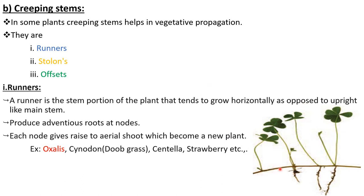This lengthy part is called a runner. The runner has so many nodes, and at each node we can see the formation of adventitious roots. Each node gives rise to an aerial shoot which ultimately grows into a new plant. The best examples are oxalis, cynodon, centella, and strawberry.